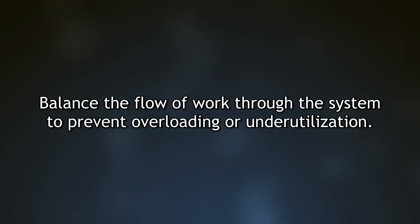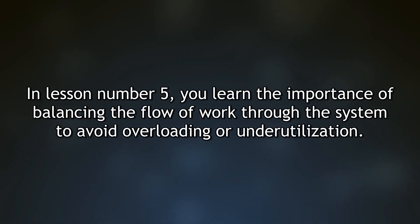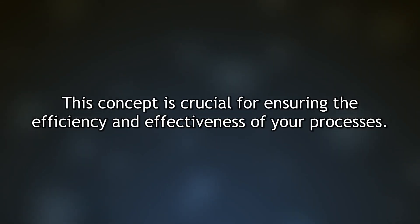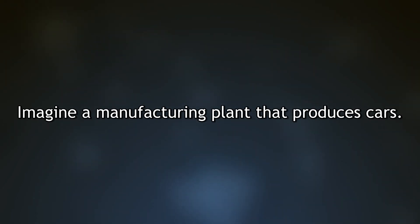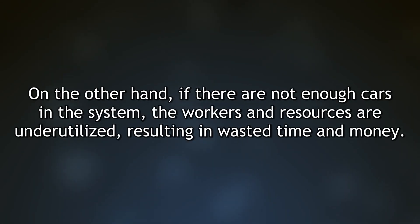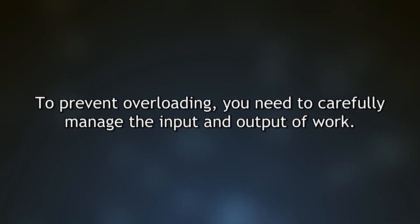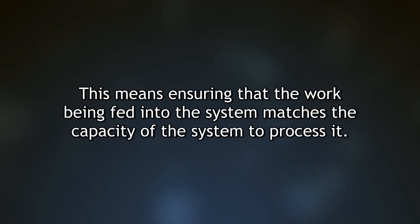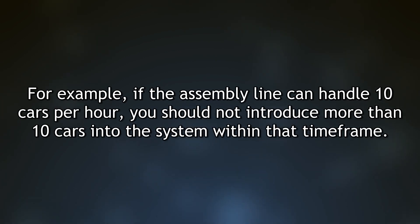Lesson 5: Balance the flow of work through the system to prevent overloading or underutilization. Balancing the flow of work is crucial for ensuring efficiency and effectiveness. In a manufacturing plant, an overloaded assembly line leads to bottlenecks and delays, while too few cars in the system results in underutilized workers and wasted resources. To prevent overloading, carefully manage input and output of work — if the assembly line handles 10 cars per hour, do not introduce more than that.